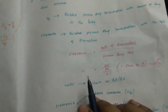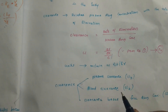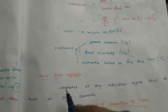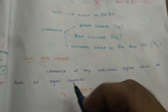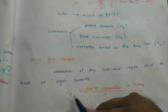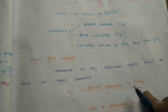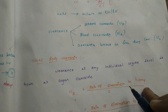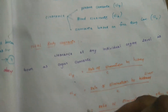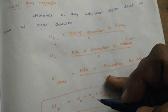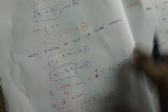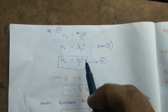The units of clearance are mL/min or L/hr. Clearance is classified as plasma clearance, blood clearance, or clearance based on free drug concentration. Before discussing total body clearance, we consider individual organ clearances — for example, renal clearance equals rate of elimination by the kidney divided by drug concentration. Similarly, hepatic clearance and other organ clearances are defined. These have additive properties: renal clearance plus hepatic clearance plus others equals total clearance.